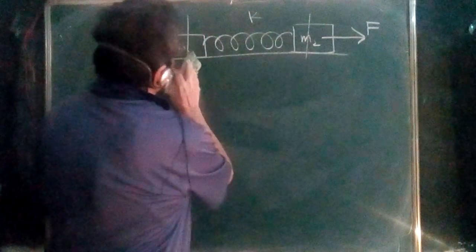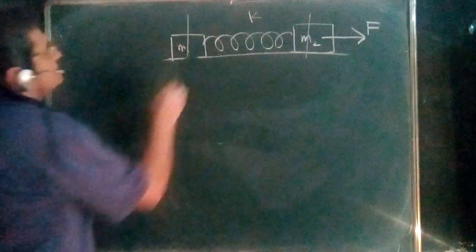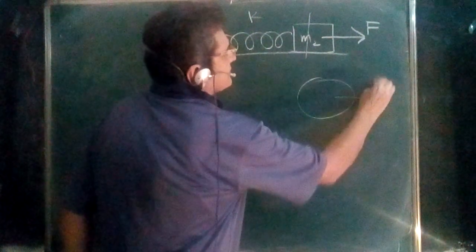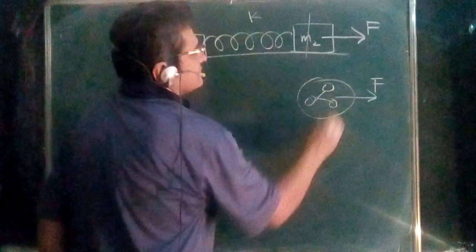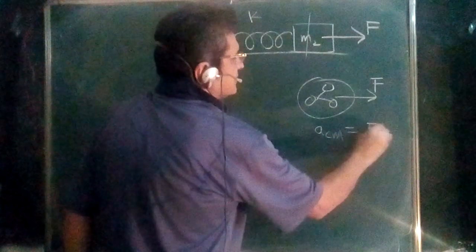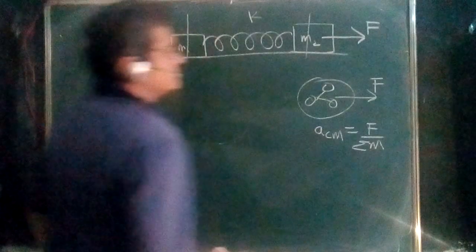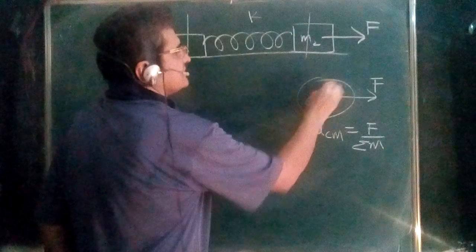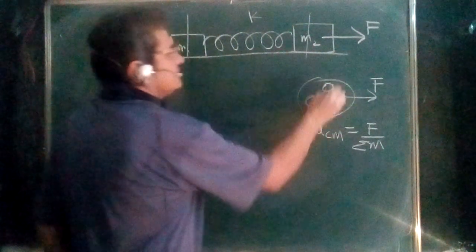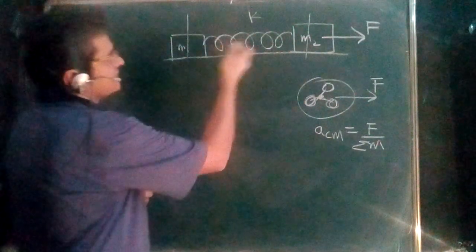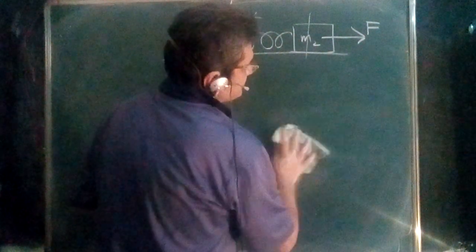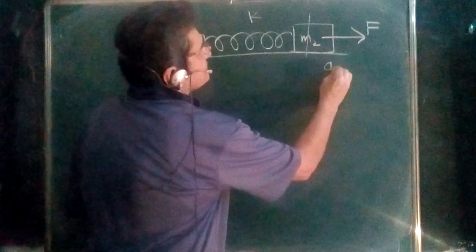The other method is shorter but requires the concept of center of mass. If any system is receiving an external force, the acceleration of the center of mass equals F divided by the sum of all masses. This is not necessarily the same acceleration for all individual masses — for a rigid body it is, but with springs each body may have its own acceleration. The center of mass acceleration is F upon (m1 + m2).